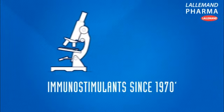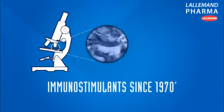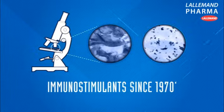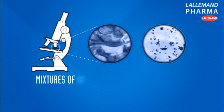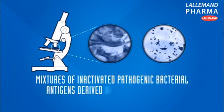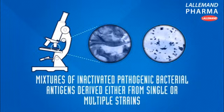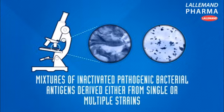Bacterial lysates used as oral vaccines were introduced in the 1970s as immunostimulants. Bacterial lysates are mixtures of inactivated pathogenic bacterial antigens derived either from single or multiple strains.